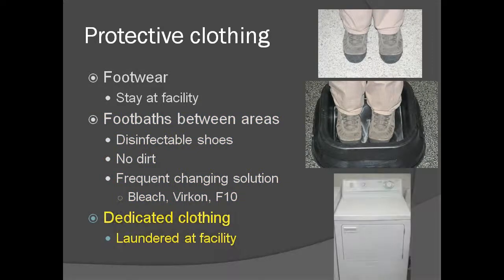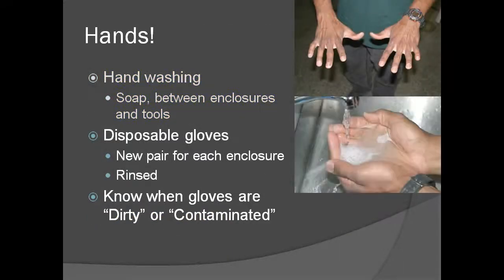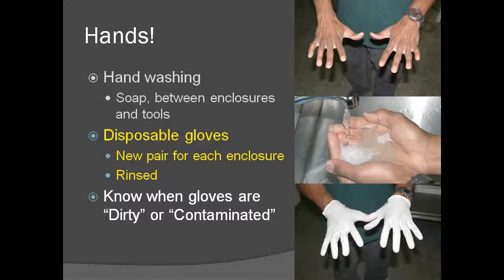Likewise, there should be dedicated clothing for the facility. A separate uniform that is worn and laundered at work is best. As people use their hands to do just about everything, having good hand washing procedures is important. Hands should be washed with soap between working on different enclosures or with different tools. Disposable gloves should be worn when handling animals or cleaning enclosures, and these gloves should be changed between enclosures.